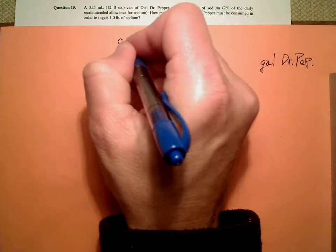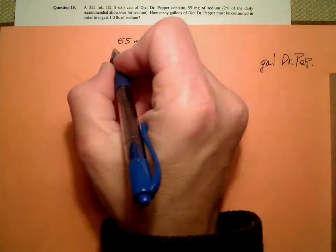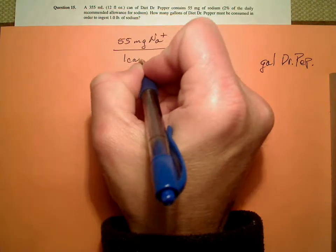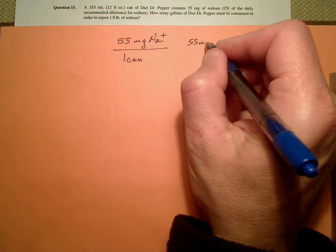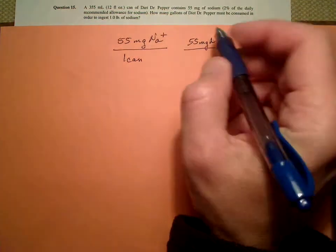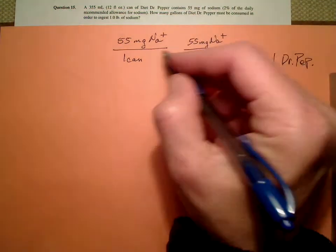So we can say that there are 55 milligrams, and they're really talking about sodium ion, per one can. But keep in mind, we could say 55 milligrams of sodium per 12 fluid ounces because that's a can.